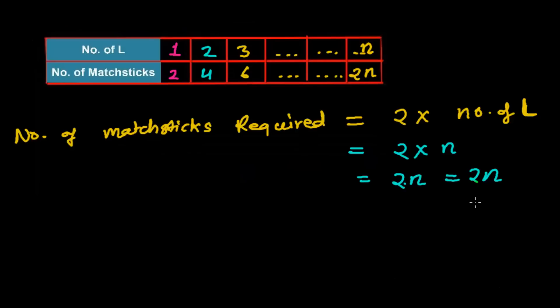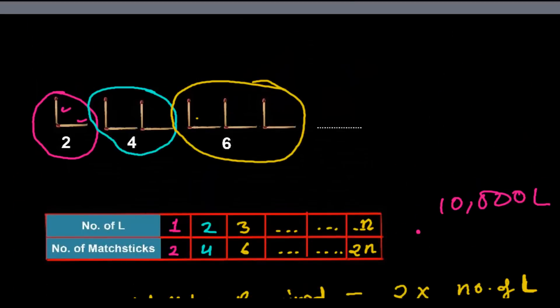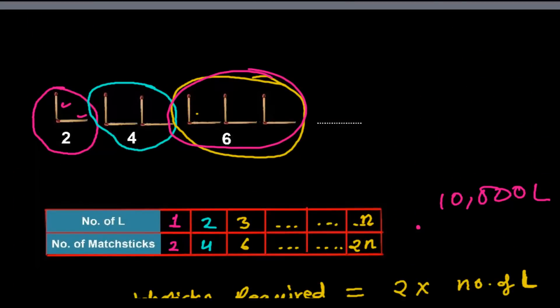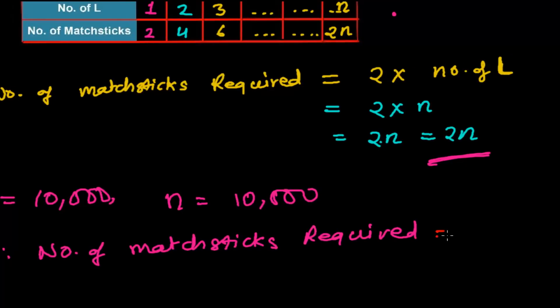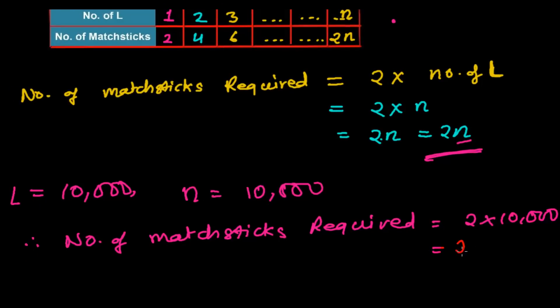Now, my dear friend, this rule is very powerful. With this rule, you can tell me how many matchsticks are required even for 10,000 L's. If you need to make 10,000 L's like this, then you can easily tell me with the help of this rule. When the number of L's is 10,000, N will be 10,000. Therefore, the number of matchsticks required will be 2 times 10,000, which means 20,000.